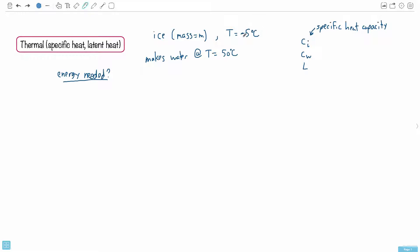That water has a temperature of 50 degrees Celsius. So in other words, you start off with a temperature of minus 5 degrees Celsius of ice, and when you're done with whatever you do to it, you end up with water at 50 degrees Celsius. The question is, how much energy is needed to make this happen?